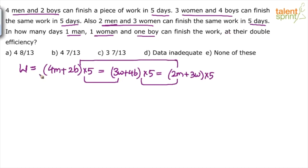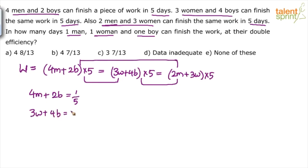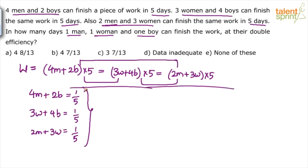The other way is to solve these 3 equations using the unitary method. Since 4 men and 2 boys finish the work in 5 days, the total capacity of 4 men + 2 boys = 1/5. Similarly, total capacity of 3 women + 4 boys = 1/5, and total capacity of 2 men + 3 women = 1/5. You can either find the relationships between man, woman, and boy, or get the capacities directly.